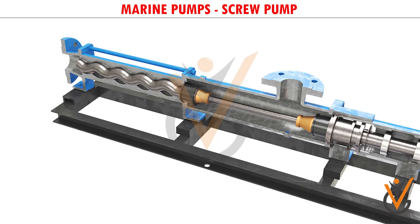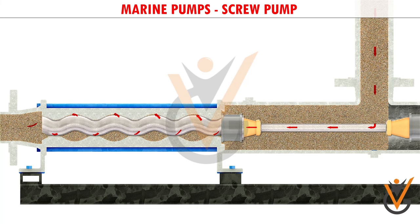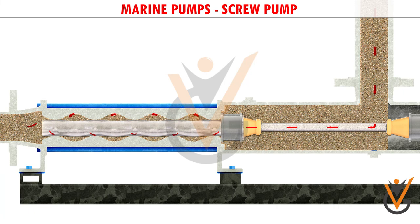Fluid enters the inlet before being transferred to the outlet via cavities between intermeshing screws. A progressing cavity pump excels when handling highly viscous fluids which are required to be moved long distances.